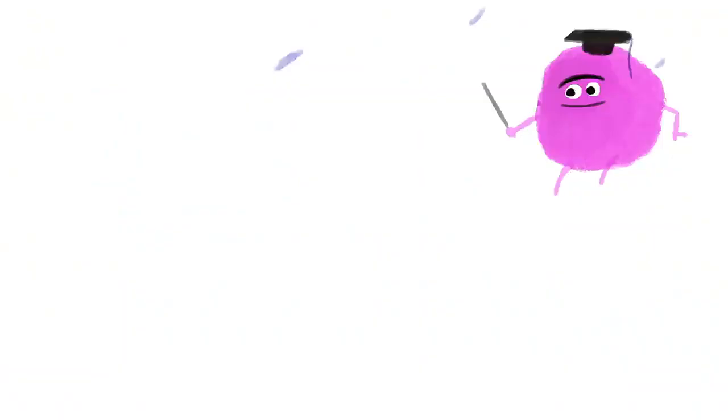Just because hesitation phenomena and discourse markers are a natural part of communication doesn't mean they're always appropriate. Outside of writing dialogue, they serve no purpose in most formal writing.